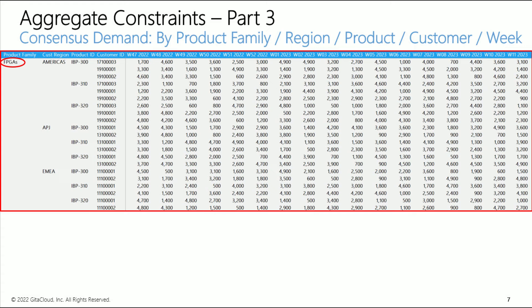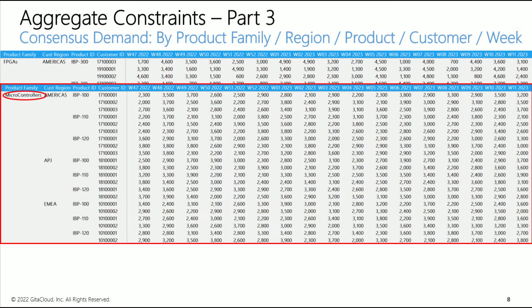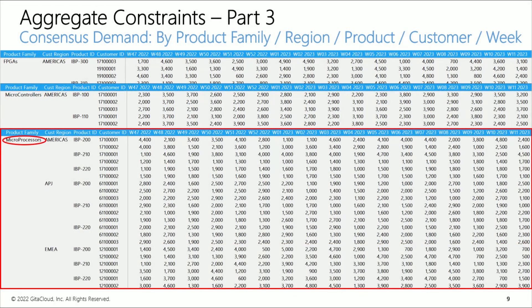See weekly consensus demand by product and customer. You can see consensus demands for the FPGA family — note different customers buy different products and the quantity varies each week. See consensus demand for the microcontrollers family; different customers buy microcontrollers, although some customers buy products across multiple families. Also see consensus demands for the microprocessor family. Note that microcontroller demands are quite comparable to the other two product families, FPGAs and microprocessors.